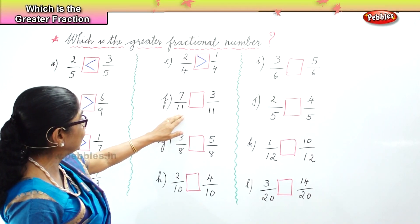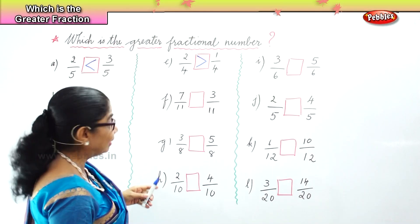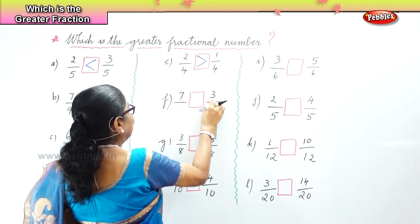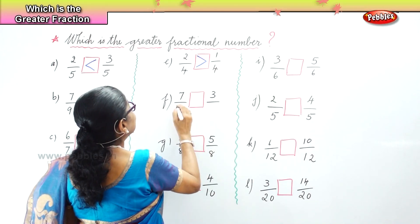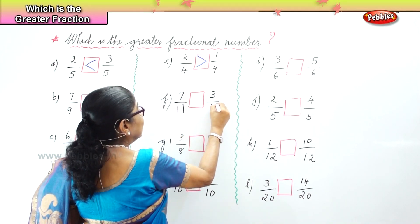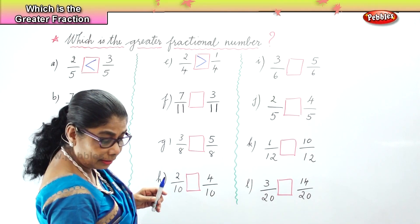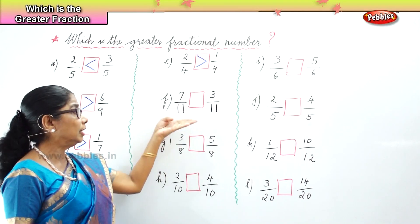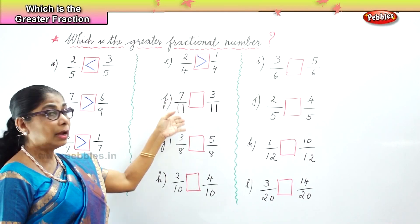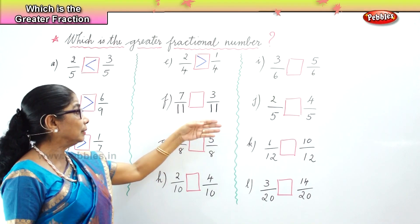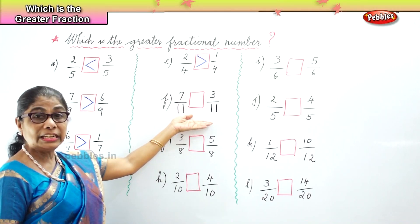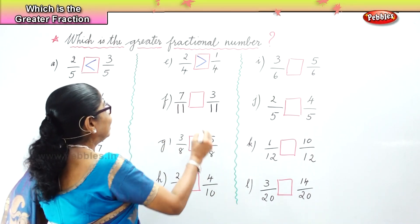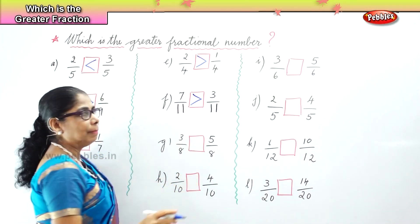Here you have the fractional numbers seven by eleven and three by eleven. The denominator is eleven and we have the numerators seven and three. The whole is divided into eleven parts — denominators are the same. We have seven parts out of eleven and three parts out of eleven. We know seven is bigger than three, so seven by eleven is greater than three by eleven.